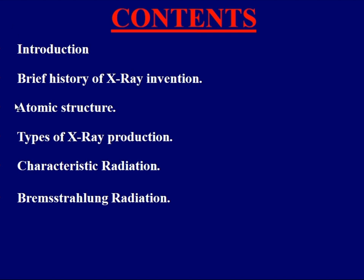Third, we are going to discuss atomic structure. We discuss this because x-rays mainly interact with the atomic structure of the target material, so we need to understand the basic idea behind it. Next, we will discuss the types of x-ray production — the different ways x-rays are produced. There are essentially two types: characteristic x-ray radiation and Bremsstrahlung x-ray radiation, which results from Bremsstrahlung scattering.